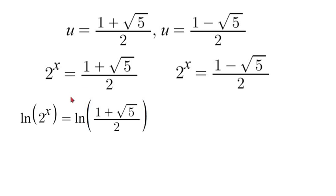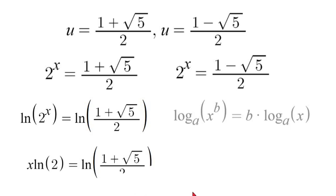We are going to use the natural log function to solve for that. So we are going to take natural log of both sides. And now we are going to apply exponential log properties. So if we had log of x to the power of b we can move that exponent, that b value to the front of the logarithm. So we would have b times log x. So in this case we would be able to move our x in front of our natural log. So we would have x natural log of 2 is equal to natural log of 1 plus square root of 5 over 2.